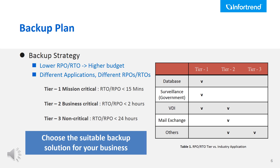Ideally, RTO and RPO are zero, which means when a disaster happens, it takes zero seconds for the disaster recovery process and there is no data loss because the last valid backup was zero seconds ago. However, in reality, there is no way to achieve zero seconds RTO and RPO. The shorter the RTO and RPO required, the higher the cost may be. Because of this, administrators choose not the shortest RTO and RPO, but the suitable backup solution for each type of business.